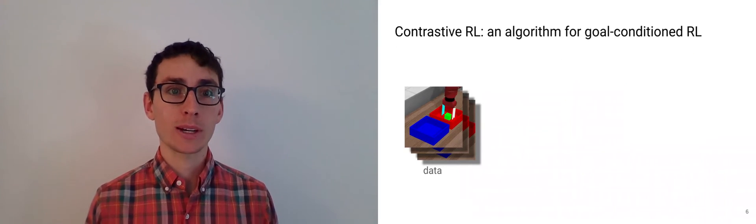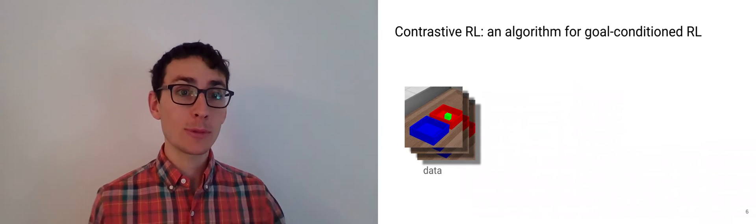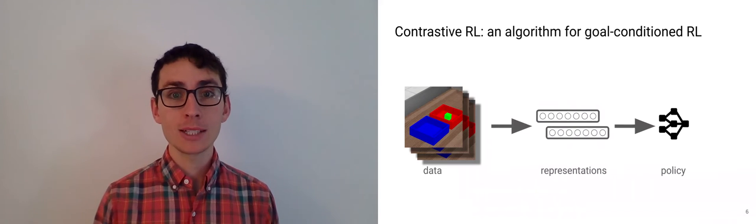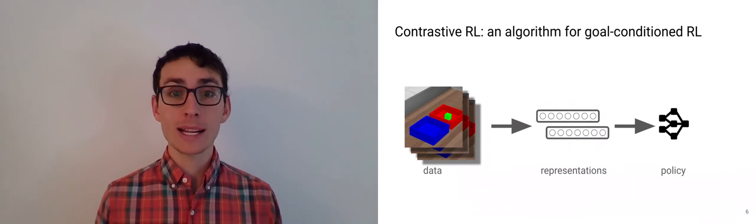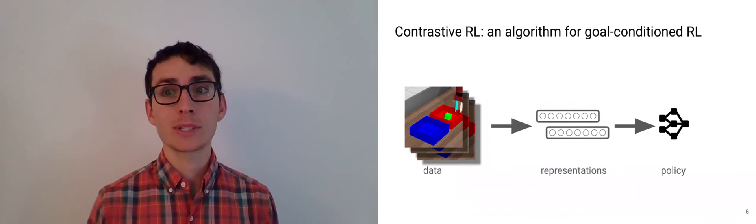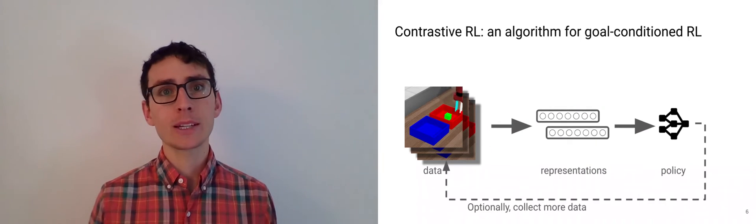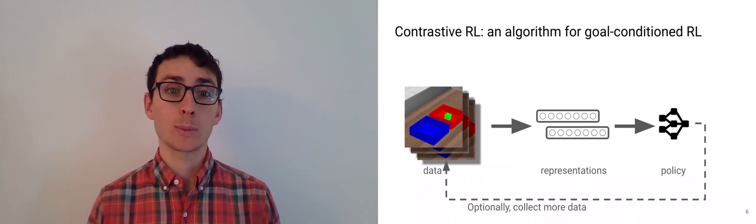Here's how the complete algorithm works. We start with the dataset, maybe from a different experiment, maybe from a random policy. We apply contrastive learning to learn the representations, and then we learn the policy to maximize the likelihood of the desired goal state. Optionally, we could go back and collect more data. We have shown that our method can work well even when we don't collect more data.